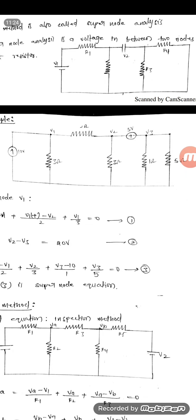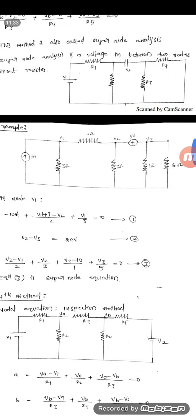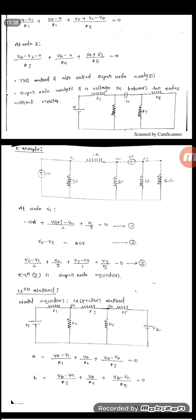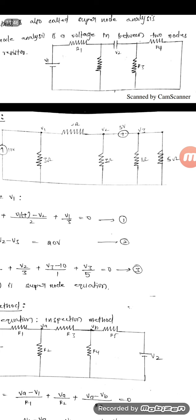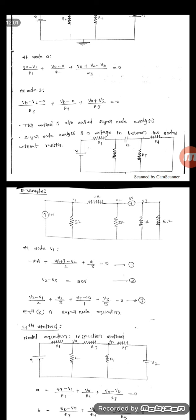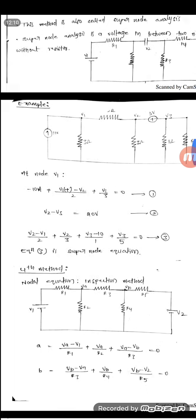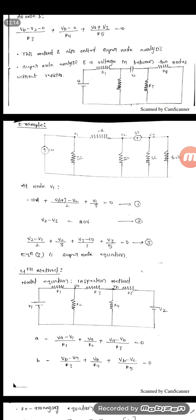For the third nodal equation, we consider all the nodes except the super node source value. Observing the circuit: (V2 − V1) / 2 + V2 / 3 + V3 / 1 + V3 / 5 = 0. Just leave the voltage source value and consider V2 and V3 at the same time — this is called super node. V1 uses the normal method, but when a voltage source is between V2 and V3, leave that voltage source and write the nodal equation for V2 as well as V3.